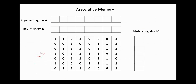Suppose the following contents of an associative memory, and suppose that the argument key is 1, 0, 1, 1, 0, 1, 1, 1, 0, and the mask or key register is 0, 0, 1, 1, 1, 1, 0, 0.